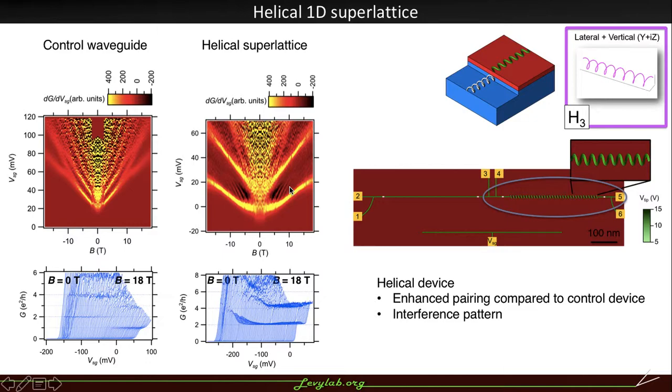The other striking effect is that up to 18 tesla we see paired transport. So this is a jump in 2 e squared over h. Whereas in the control device, this splits to steps of 1 e squared over h at about 10 tesla.